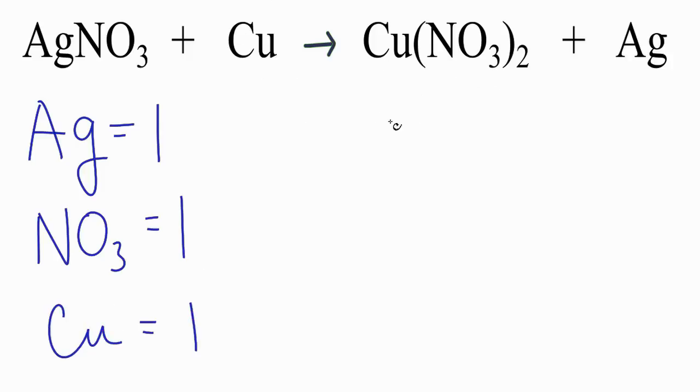On the product side, for the Ags, I have one of those. For the NO3s, I have two. Two times this in parentheses, that gives us two NO3s. And then copper, this two only applies to the parentheses, so I just have one copper atom.